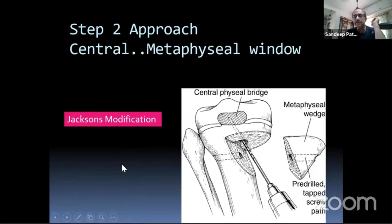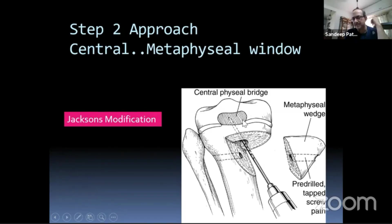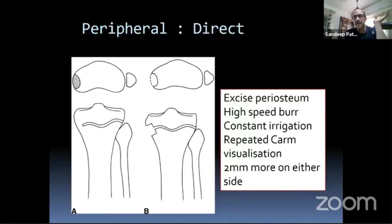The physical dimensions and distance from landmarks were noted for mapping. For the approach: if you have a central bar, you can remove a metaphyseal triangular piece of bone, pre-drilled, and approach the central bar through a hole in the metaphysis, then repose that fragment and put in a screw. For a peripheral bar you don't need this — a direct approach suffices.